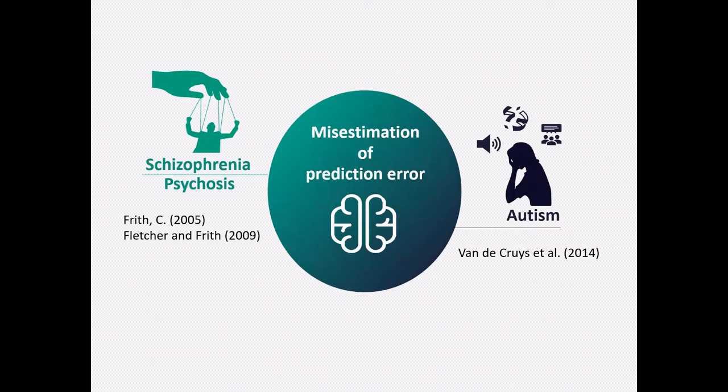So for our project, we wanted to look at prediction error, because a large enough prediction error is surprising enough to indicate that the world has changed to such an extent that new learning is needed. Van de Cruys and colleagues argued that the preference for predictability and routine in autism occurs because frequent surprise constantly triggers new learning, which becomes overwhelming.